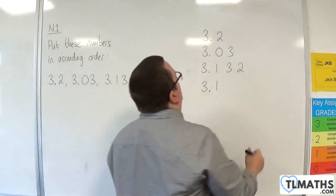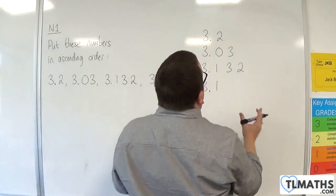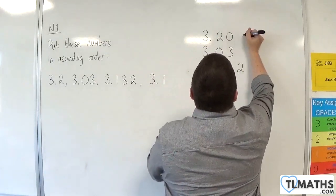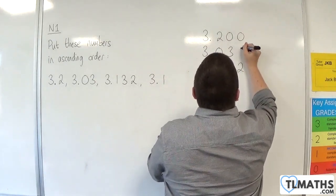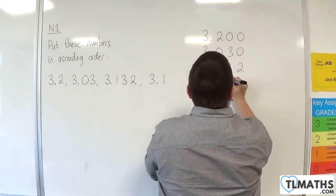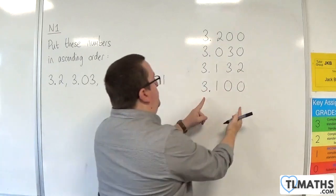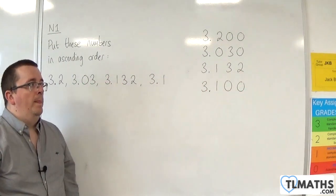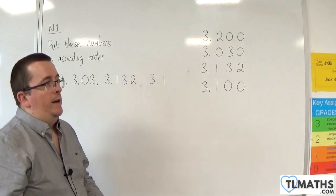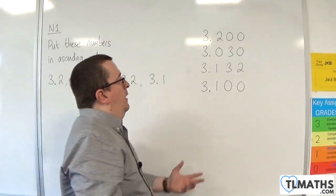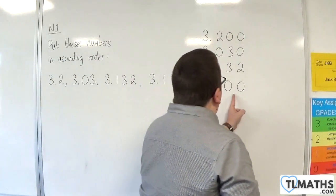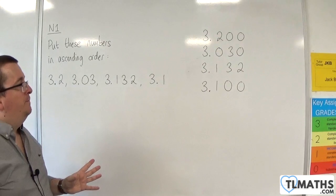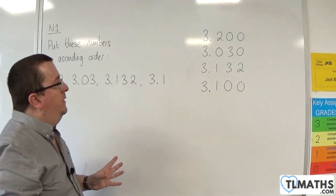Then fill in the gaps that you have with zeros. Now, I've done nothing to this number, 3.1 — I haven't changed it in any way. I've just added in zeros where we don't bother writing any.